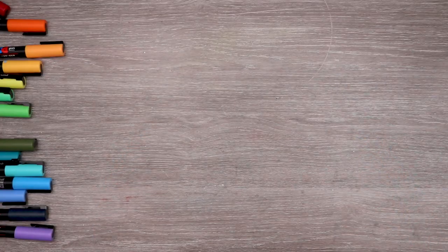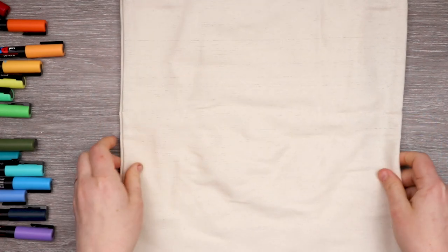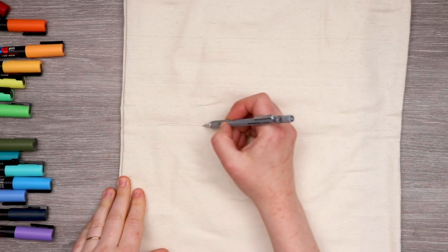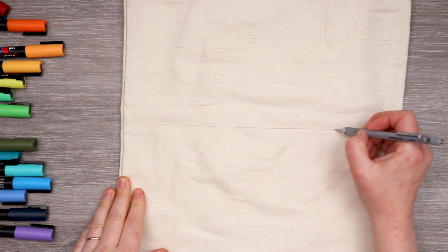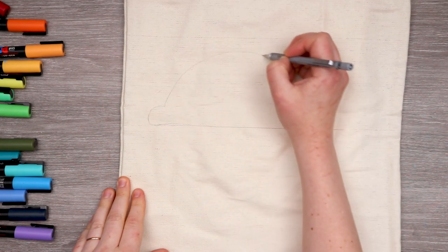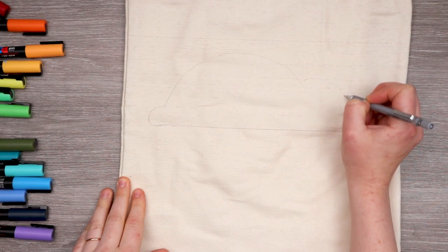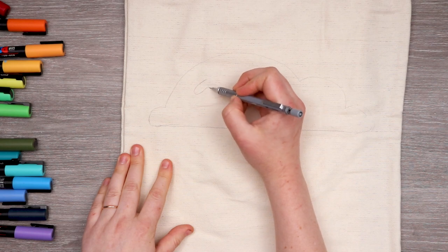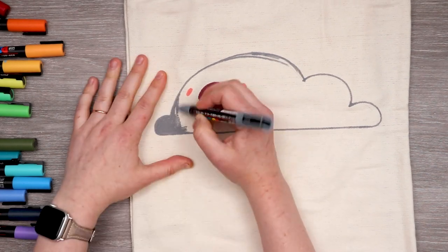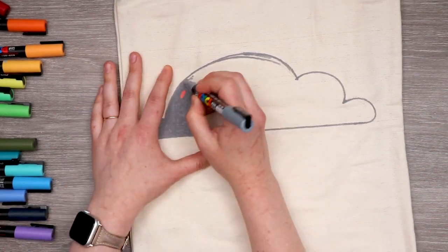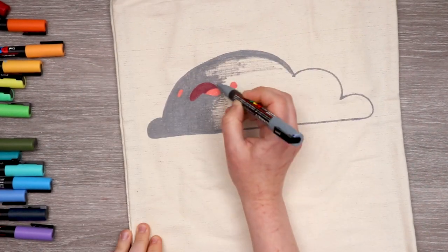Next up I wanted to try blending the Posca pens, but I actually went into this idea thinking I was going to create a rainbow. And about one-third through filling in this cloud creature, I realized that my gray pen just wasn't going to last.